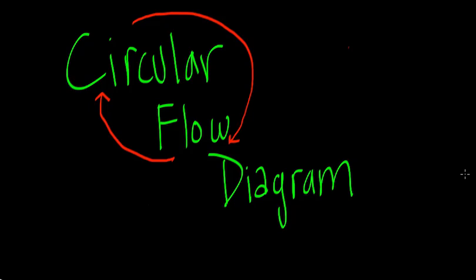Now that we've covered the factors of production and the different types of economies, it's time to put the two together to form a basic visual representation of the way a market economy works: the circular flow diagram.